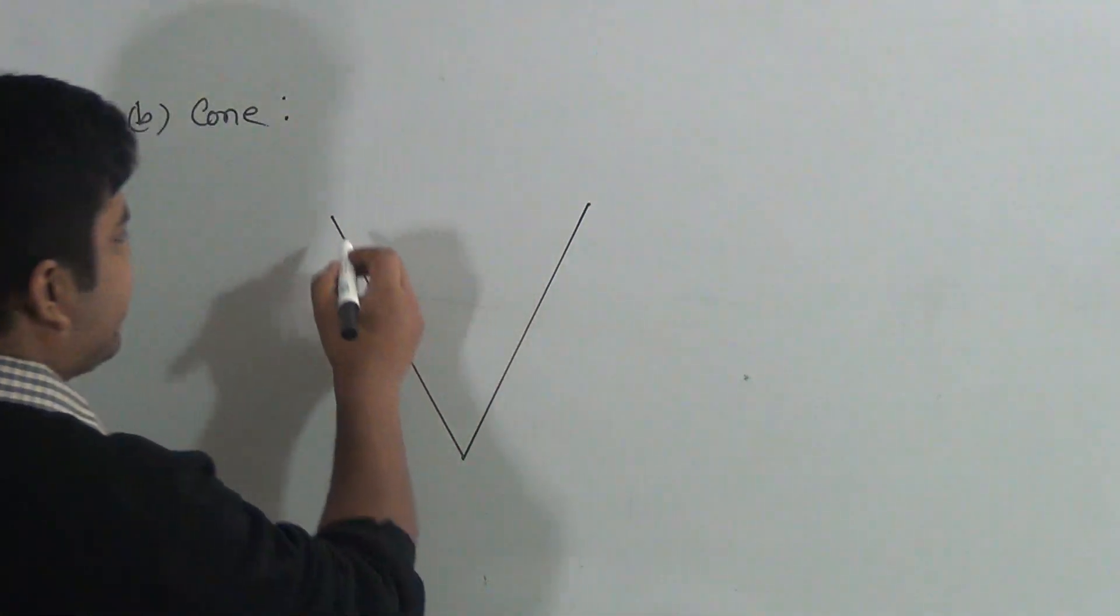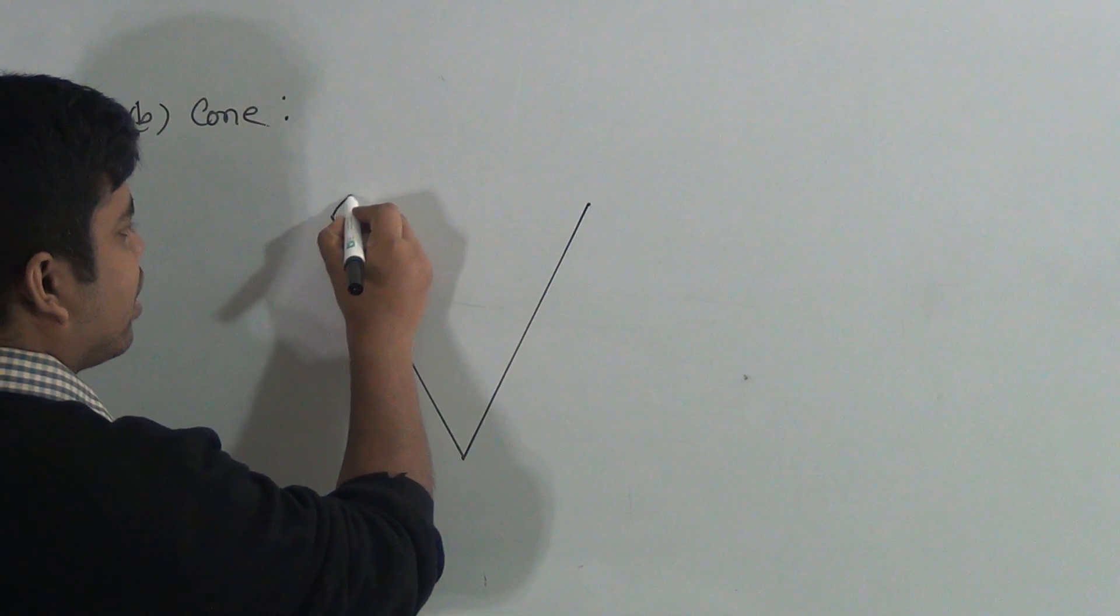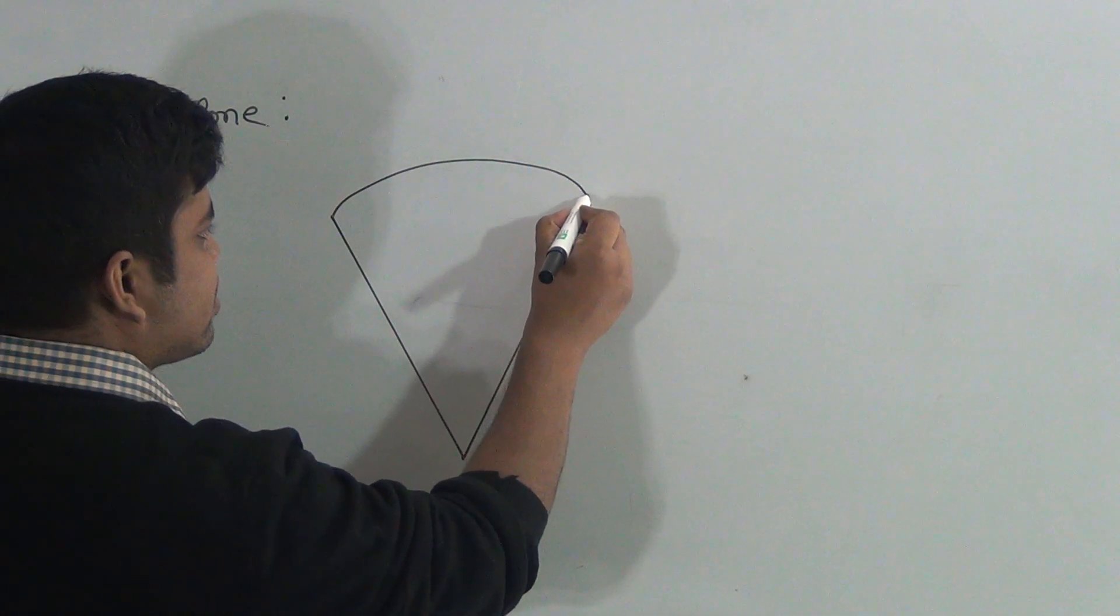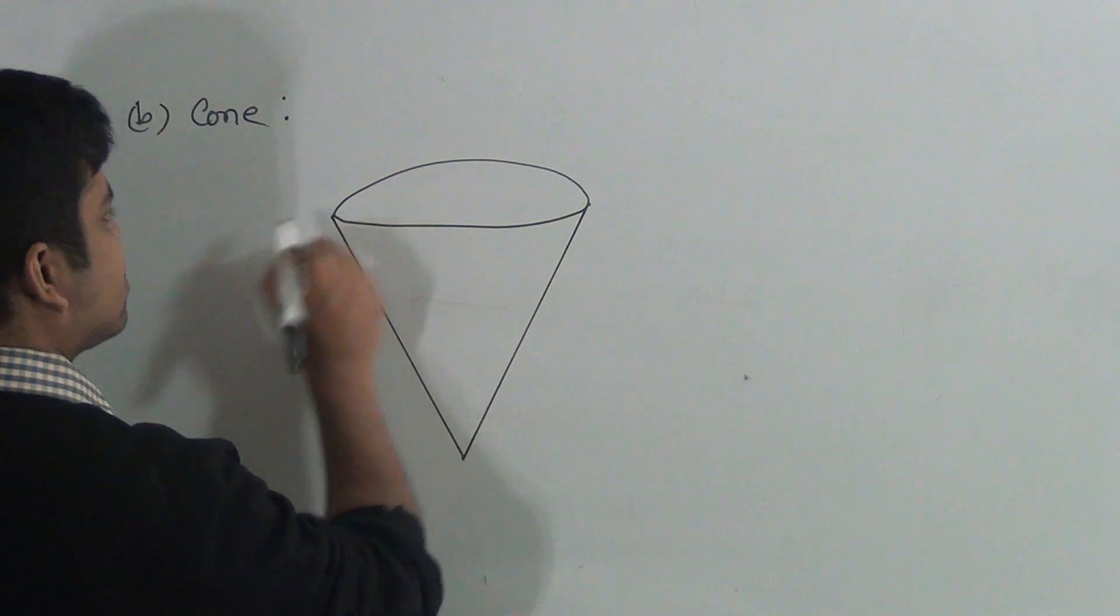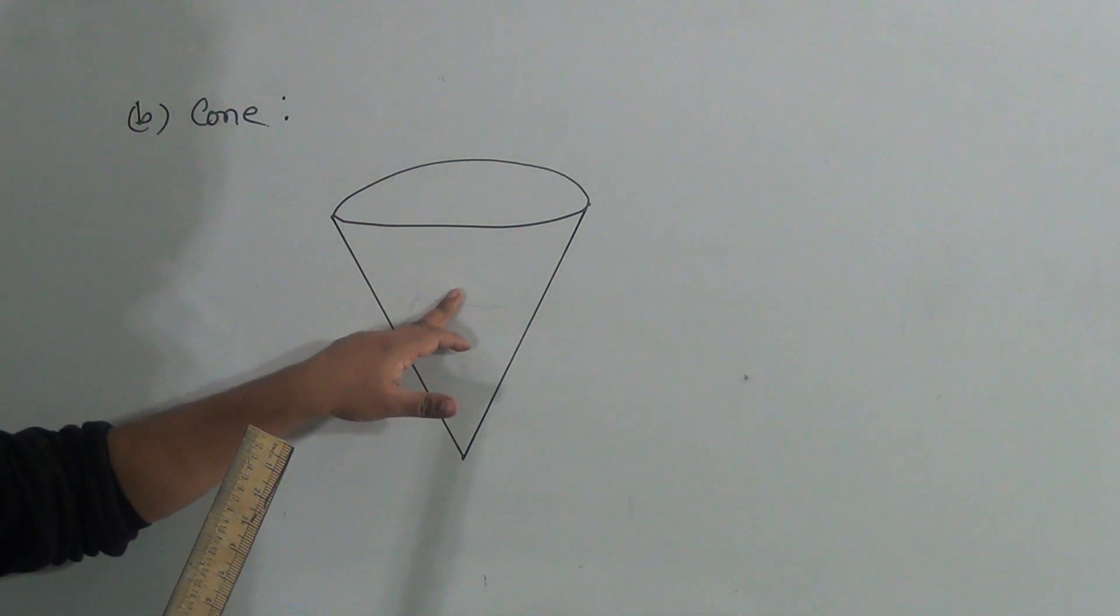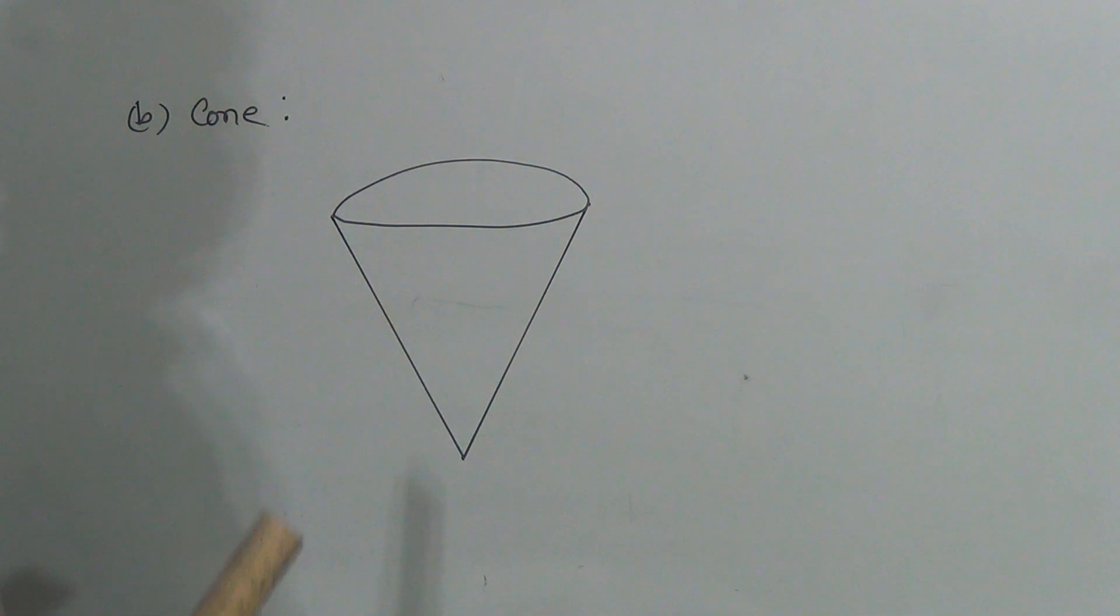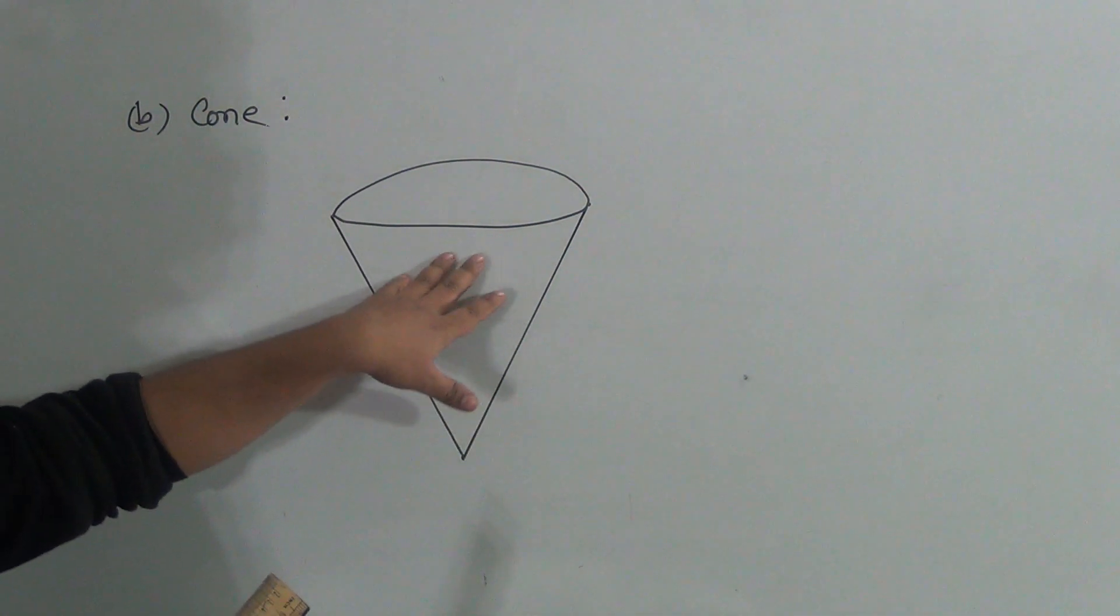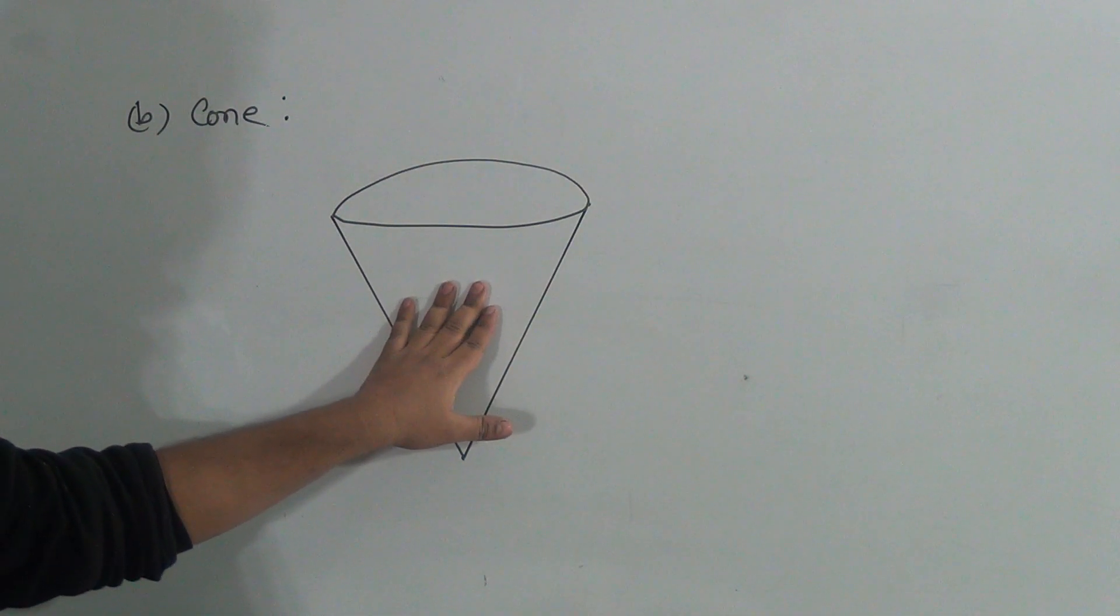Now I draw a circle. So this is called cone. The figure is cone. And it looks like an ice cream. It looks like an ice cream. It is my favorite. I think your favorite too.